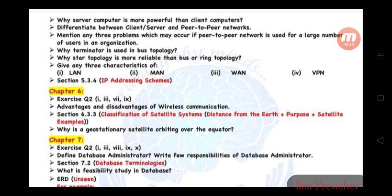Why server computer is more powerful than client computer? Differentiate between client-server and peer-to-peer networks. Mention three problems which may occur if P2P network is used for large number of users in organization. Why is terminator used in bus topology? Why is star topology more reliable than bus or ring topology? Give three characteristics of LAN, MAN, VAN, and VPN. Section 5.3.4: IP address scheme.